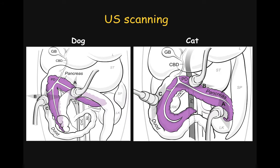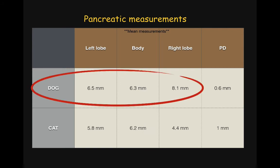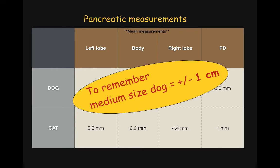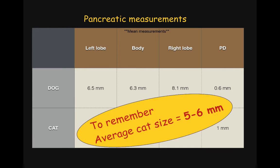Pancreatic lobes in cats tend to be longer and the tips are usually hook-shaped. As change in size is one of the features evaluated to assess pancreatic disorders, here are some guidelines you can refer to. This table was made using reported mean measurements. In dogs, the reported values include a wide range of dog sizes, but as an easy number to remember, for a medium-sized dog, a pancreatic thickness of 1 cm is considered normal. In cats, the population size is more uniform, and a pancreatic thickness of about 5–6 mm is a normal value.